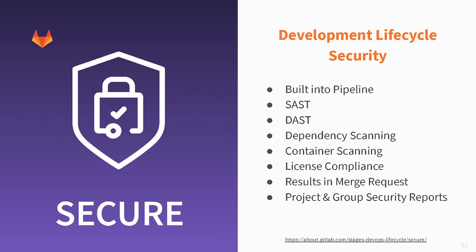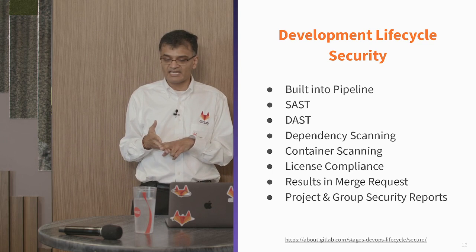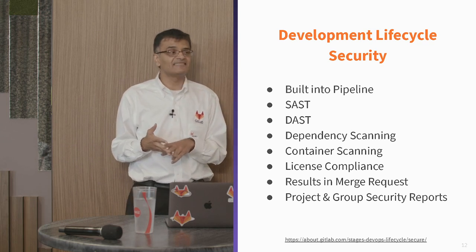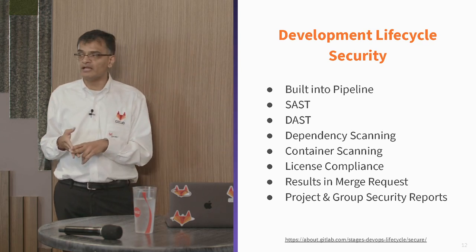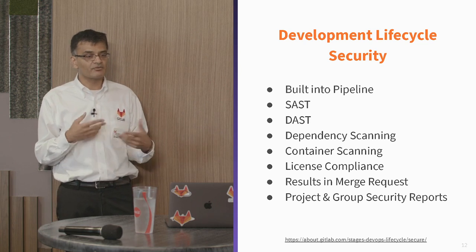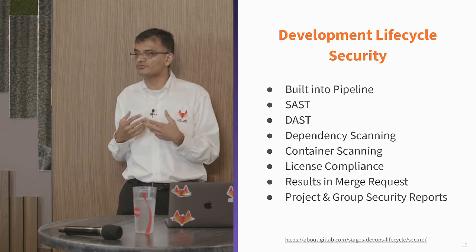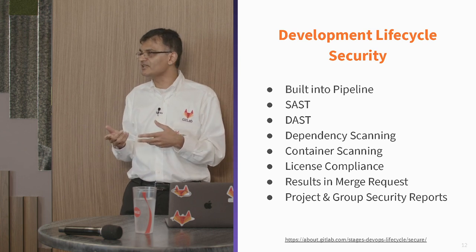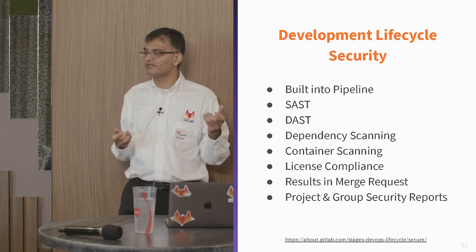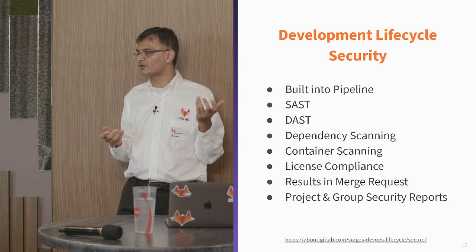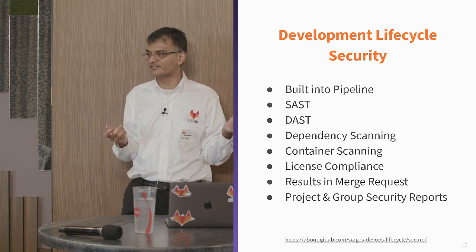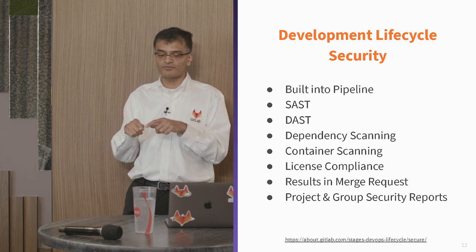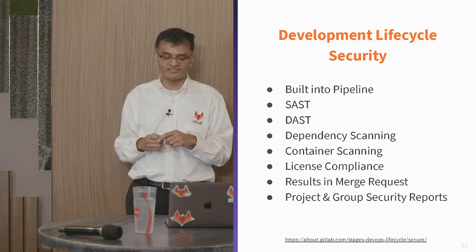This is what GitLab Secure encompasses — it's built into the pipeline. It's got SAST, static analysis — source code analysis. DAST, dynamic analysis. Dependency scanning — it will go through your dependencies, run a scan, and provide results saying there's a CVE on this dependent item you pulled from some open source product. Here's the patch — go download it. It'll give you the CVE link.